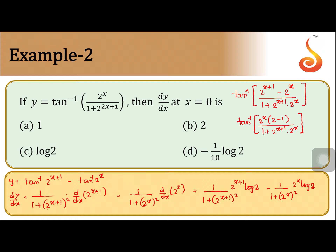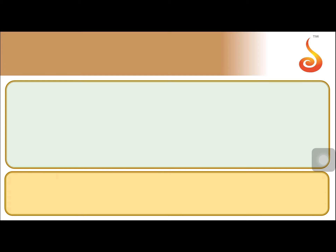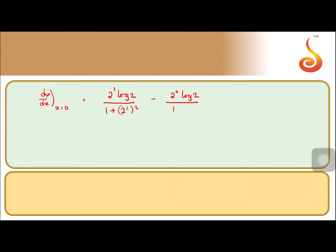Now he is asking: at x equal to 0, what happens? We substitute x equal to 0 in both the cases. So dy by dx at x equal to 0 gives us 2 to the power 1 into log 2, divided by 1 plus 2 to the power 1 whole square, minus 2 to the power 0 log 2, divided by 1 plus 2 to the power 0 whole square.